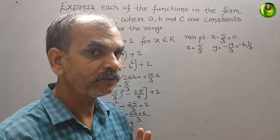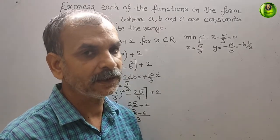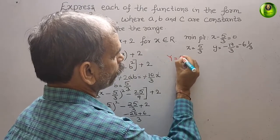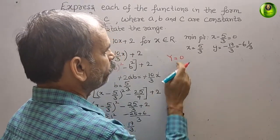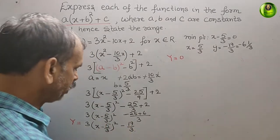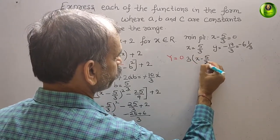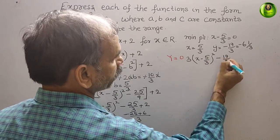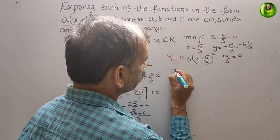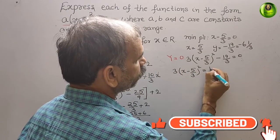Therefore the coordinates of the minimum point are (5/3, -19/3). Now we will find the x values by setting y = 0. Substituting: 3(x - 5/3)² - 19/3 = 0. Bringing -19/3 to the right side: 3(x - 5/3)² = 19/3.